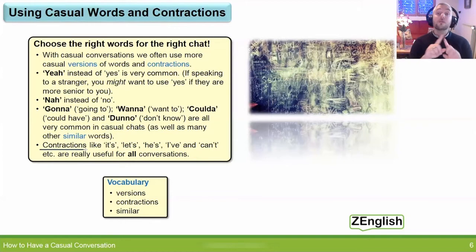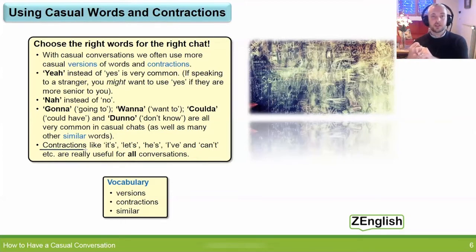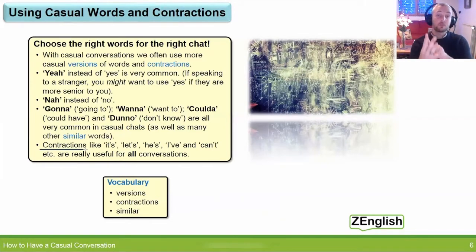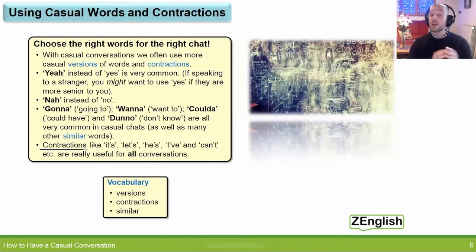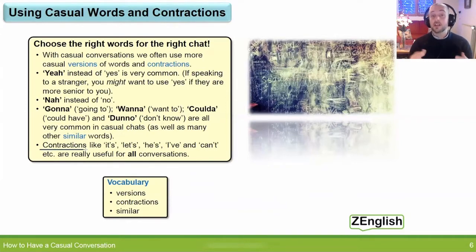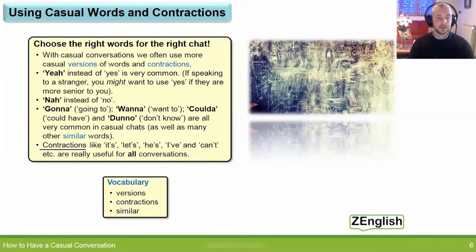Contractions are useful for all conversations — whether they're casual conversations with friends, a nice chat with a stranger on a train, talking with your colleagues at work, or giving a presentation at work to important clients. Really, contractions are fine for every conversation. Most of them, like these normal ones, are not considered to be too informal or too casual. In fact, they're a very normal, natural part of the day-to-day English language. They make it quicker and easier to speak. So think about using those whenever you're talking.